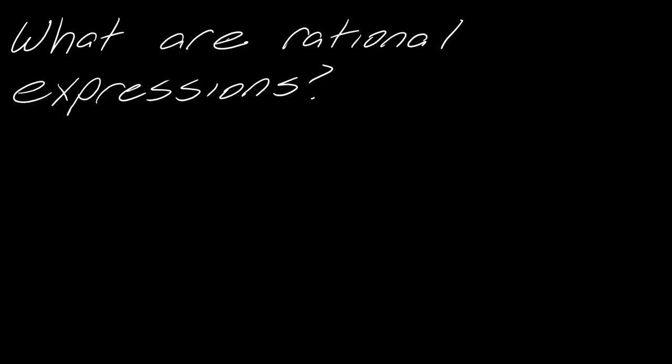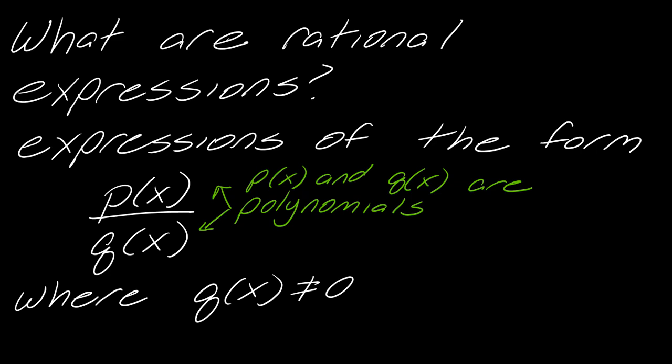So let's start off by talking about what are rational expressions. Well, these are expressions of the form p(x) over g(x) where these are both polynomials. If you forgot what that is, don't worry, I'll show you in a second. And the g(x), the thing in the denominator, can't be zero. That's always the case with fractions. You can't have zero in the denominator.